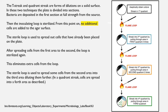Now let's move to other streaking methods: the T-streak and quadrant streak. These are mostly taught in institutes and highly used in practicals. The T-streak and quadrant streak are forms of dilution on a solid surface. In both techniques, the plate is divided into sections or quadrants. Bacteria are deposited in the first section at full strength from the source — this is the first zone of inoculation where bacterial count or population is highest.